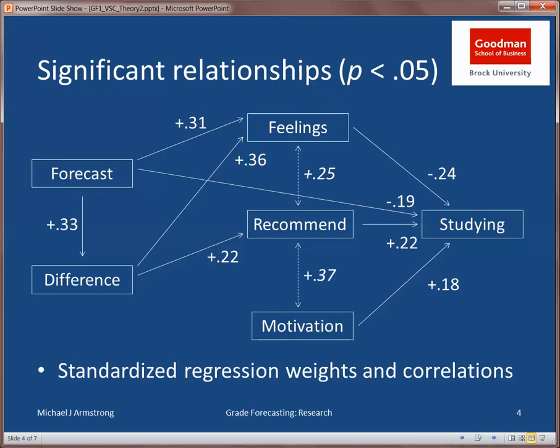There were two surprises in this data. First of all, there was no direct connection between students' studying behavior and the difference between the forecast and their expectation. I would have thought that students who were surprised by a lower forecast grade than what they expected would have been the ones who would then study harder, but that didn't show up as a statistically significant connection. What did show up was the forecast grade itself — students with low forecasts were more likely to study harder. That was a bit surprising because it existed even if the forecast was merely confirming what the students had already expected.